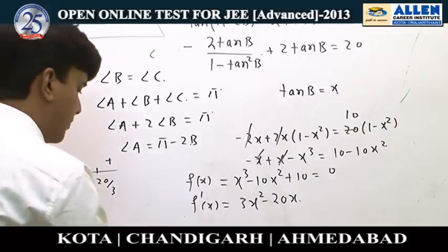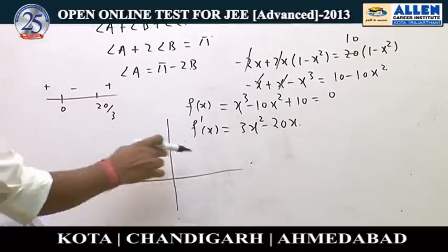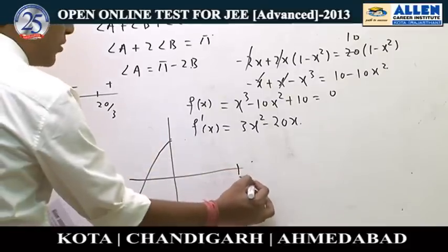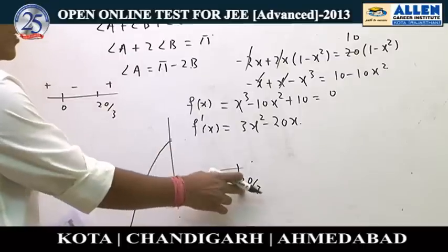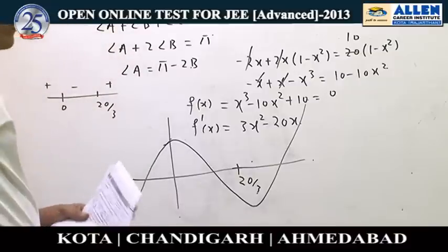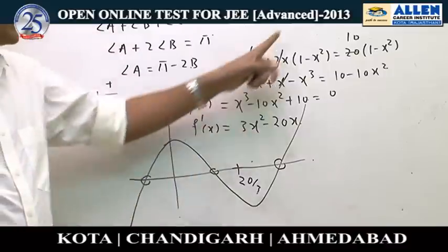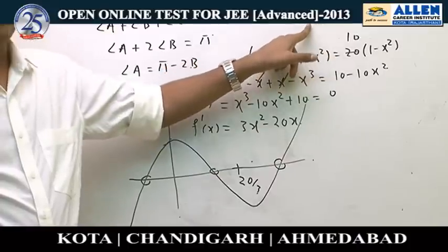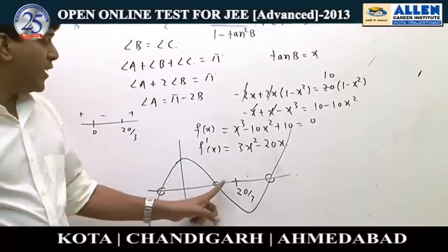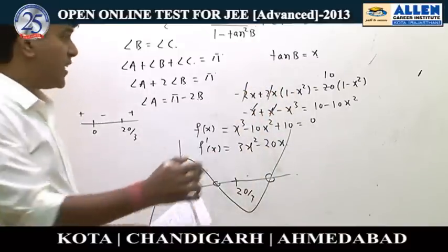Sketching the graph: f(0) equals 10, so the function starts from negative infinity, increases to a local max at 0, decreases to a negative value at 20/3, then increases to infinity. This gives one negative root and two positive roots. Since x equals tanB cannot be negative (otherwise angle B would be obtuse, and with angle B equals angle C both would be obtuse — rejected), the two positive values give two valid triangles. The correct answer is B.